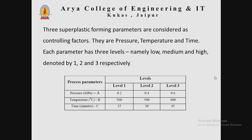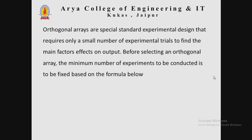Suppose three super plastic forming parameters are considered as controlling factors: pressure, temperature, and time. Each parameter has three levels — namely low, median, and high. Level one indicates low, level two is median, and level three is high. All parameters can be evaluated according to these levels.